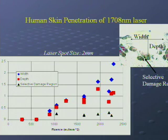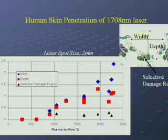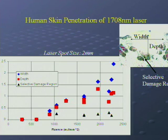This plot shows how the damage relates to the energy we shine on the tissues. The more energy we shine on it, the deeper and wider the damages are, but the selective damage region stays roughly the same, as you can see.